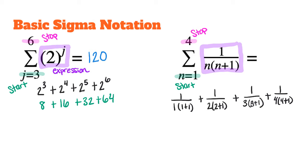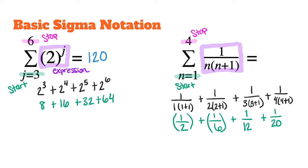I started by plugging in the number 1 into the denominator of this expression, then plugged in 2, 3, and 4, stopping at 4 because that is what my sigma notation told me to stop at. Simplifying the denominators and adding the fractions together — making sure to use parentheses on the calculator — my calculator gave me 0.8, which equals 8 tenths, or reduced to 4 fifths. So my summation is 4 fifths.